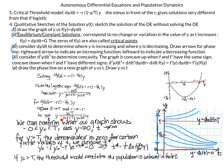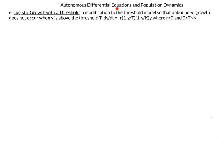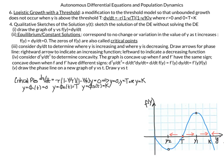Logistic growth with the threshold is a modification to the threshold model so that unbounded growth does not occur when y is above the threshold. Our equation is dy/dt equals minus r times (1 minus y/T) times (1 minus y/k) times y. We'll look at a qualitative sketch of this solution. It's a cubic equation, and looking at critical points where dy/dt equals zero — setting all factors to zero, we get that either 1 minus y/T equals zero, or 1 minus y/k equals zero, or y equals zero.